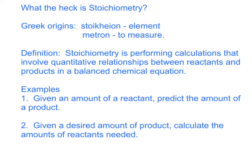So what is stoichiometry exactly? There are Greek origins to the word. Stoikheion means element and metron means to measure. So you are measuring the elements, or the number of elements. The strict definition is stoichiometry is performing calculations that involve quantitative relationships between reactants and products in a balanced chemical equation. Quantitative means we can put numbers on things and use the number of one thing to predict the amount of something else.